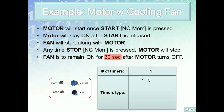The best timer to use out of the three — TON, TOF, or RTO — since we want the fan to be on for a certain time after a condition goes to OFF, the best and easiest approach is to go with an Off-Delay Timer (TOF). We can build the solution using TON or RTO, however it's easier and more straightforward using TOF. Let's see how this works in RSLogix.